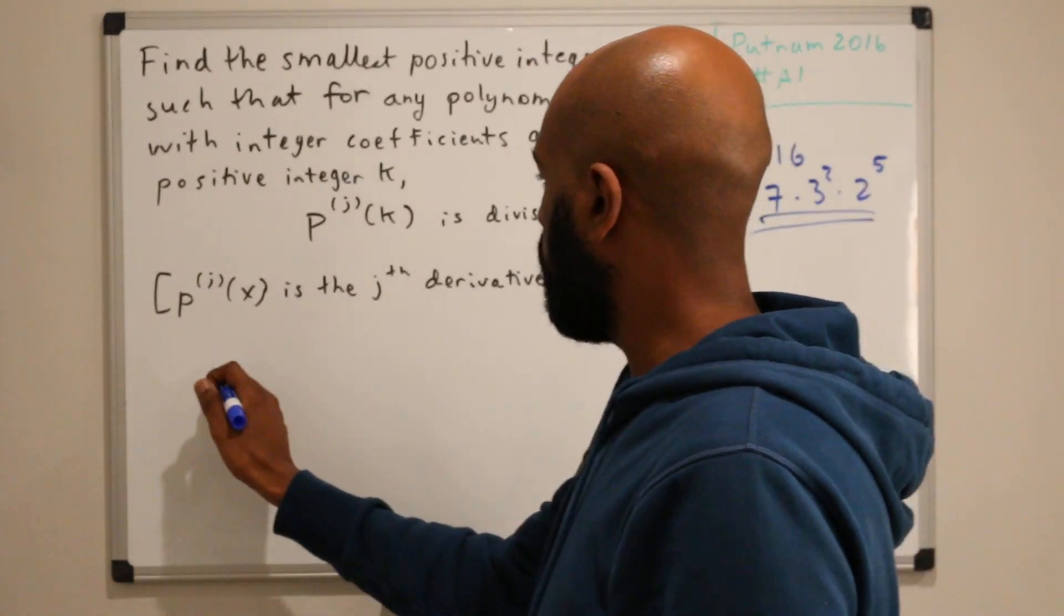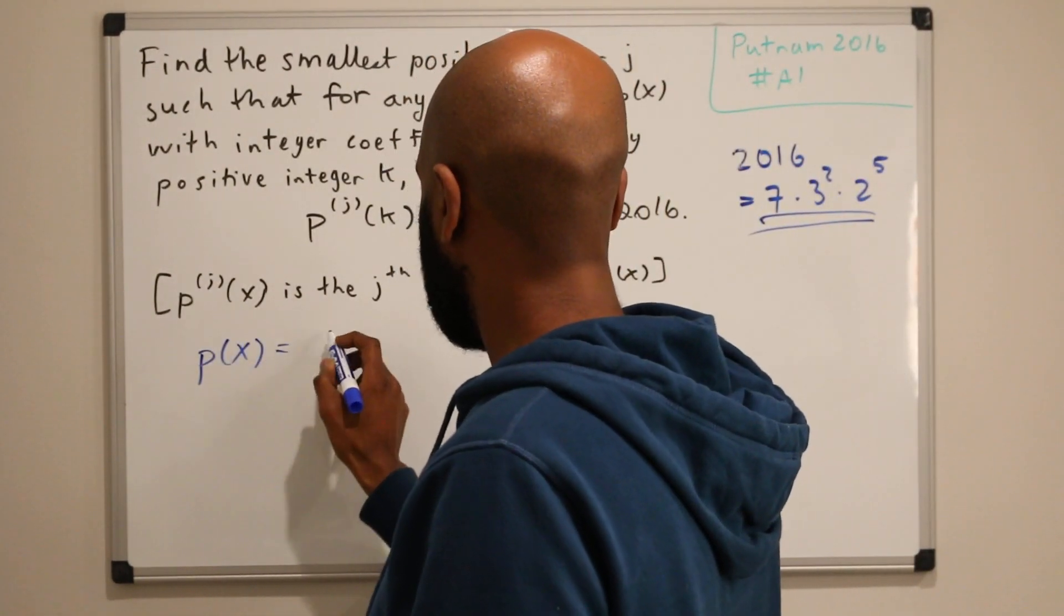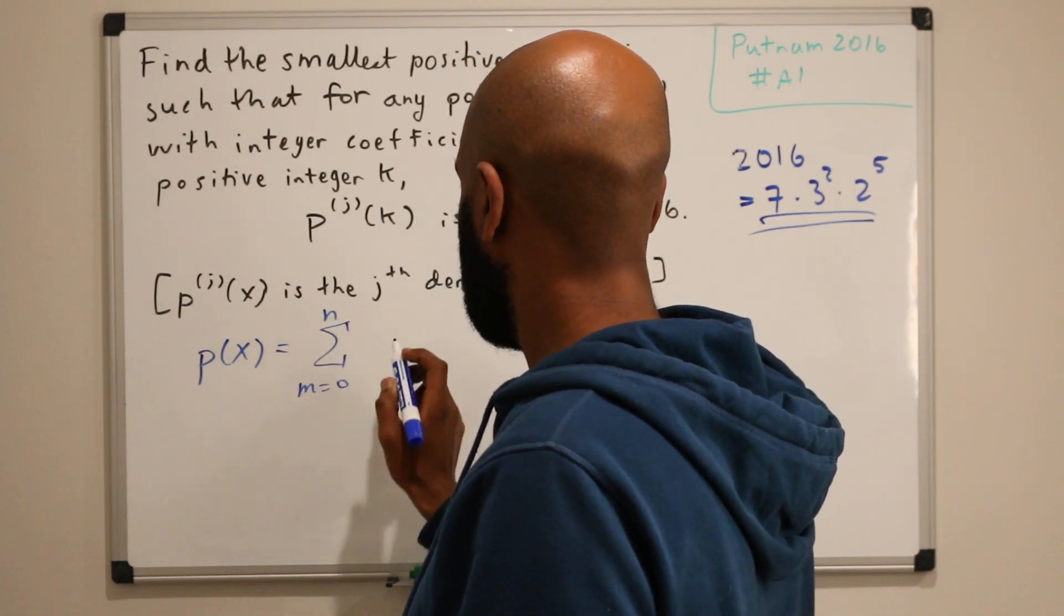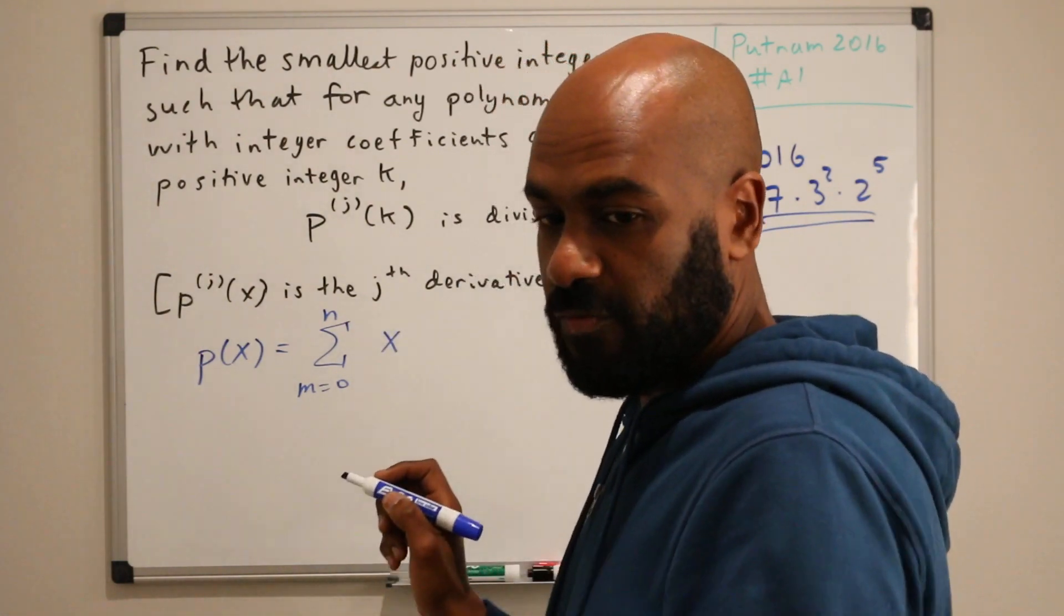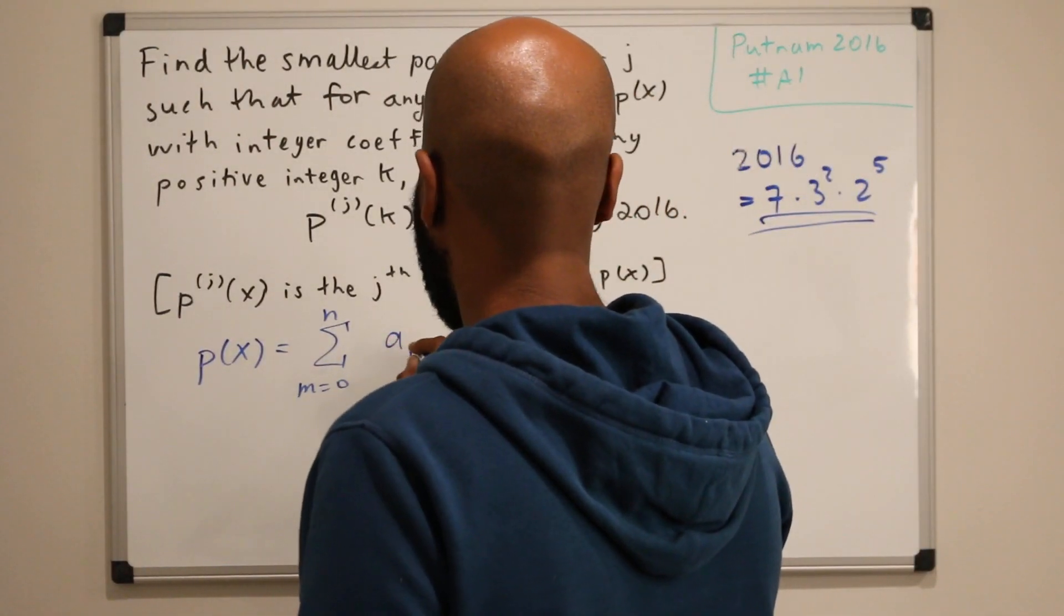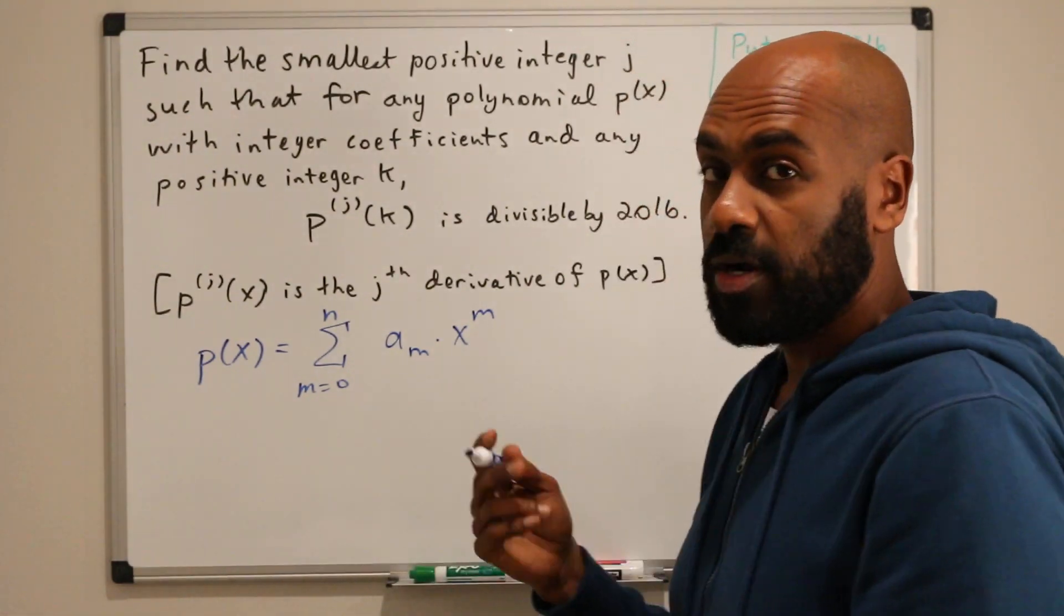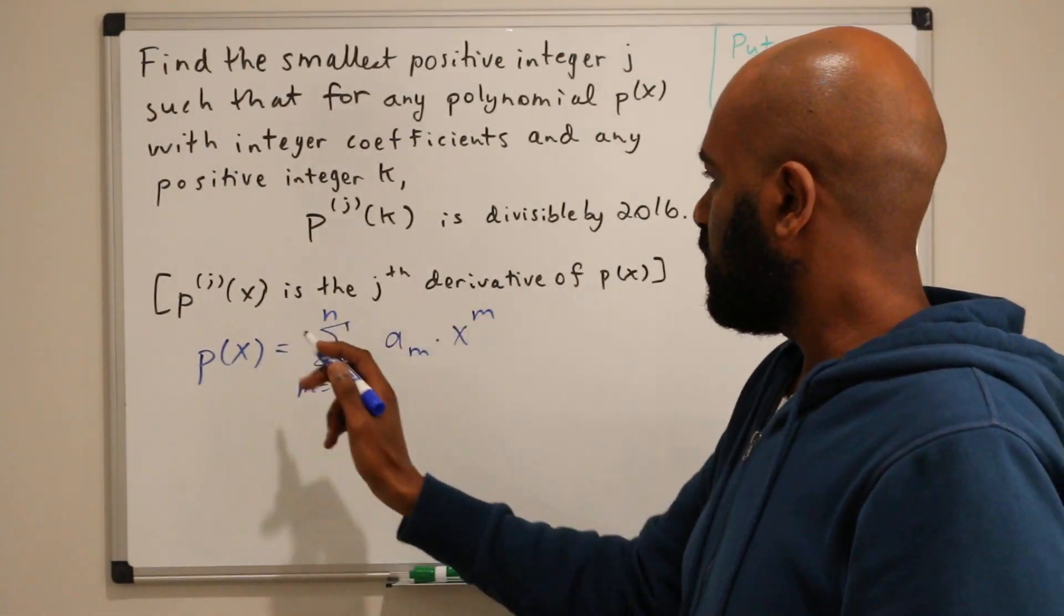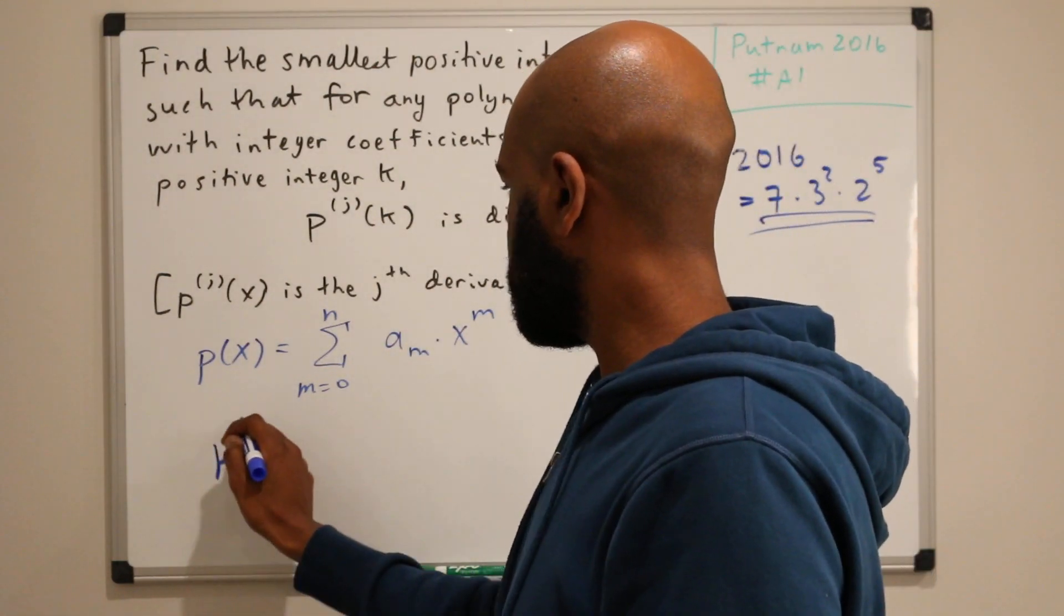So say our polynomial is some generic thing. So it looks like the sum m equals 0 to n of, well, we need a coefficient, a sub m times x to the m, where these ams are integers. If we take the jth derivative, which is 8 in this case, that's the thing we're testing.